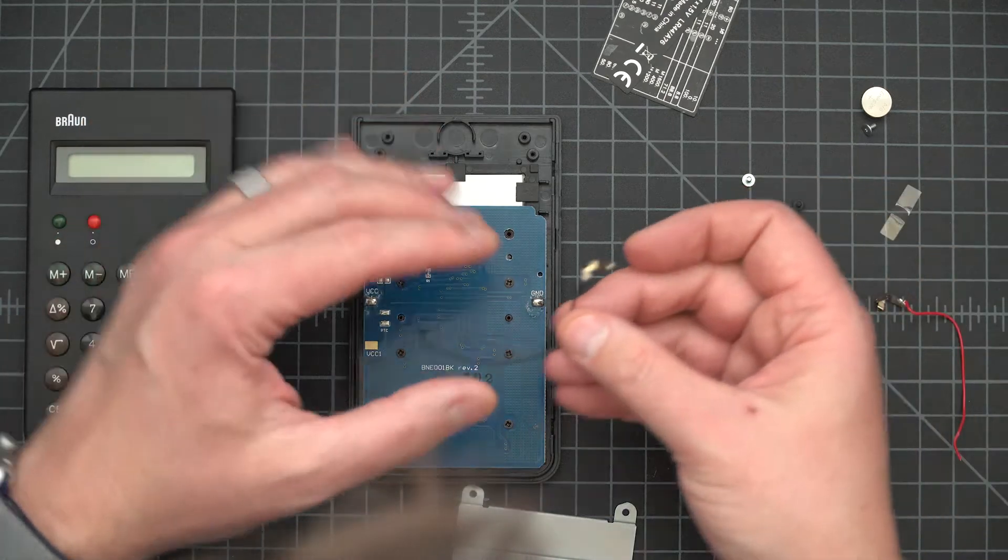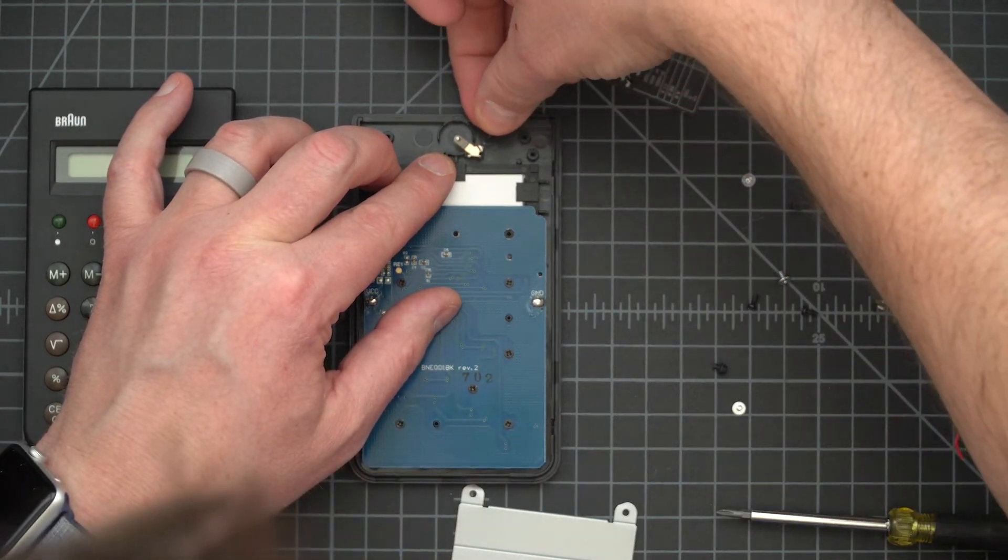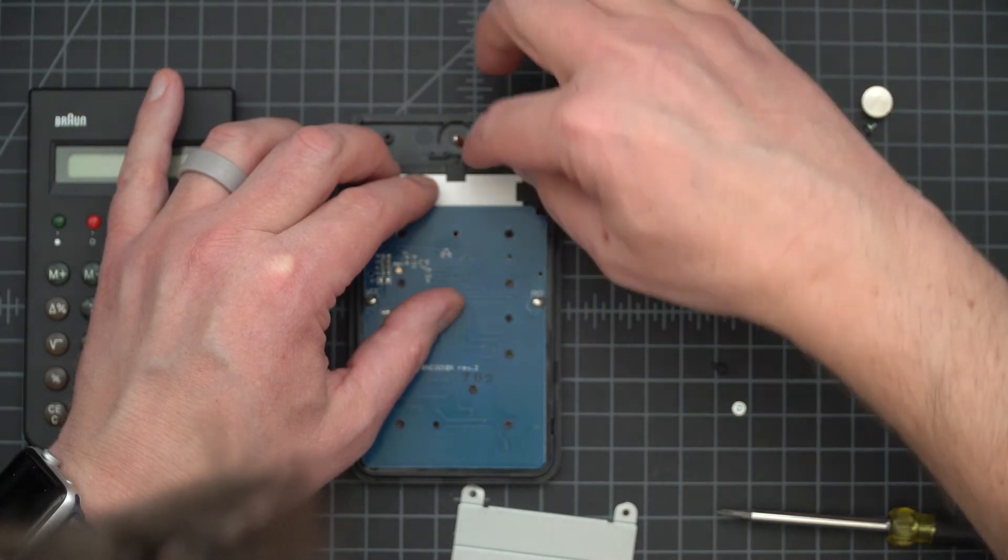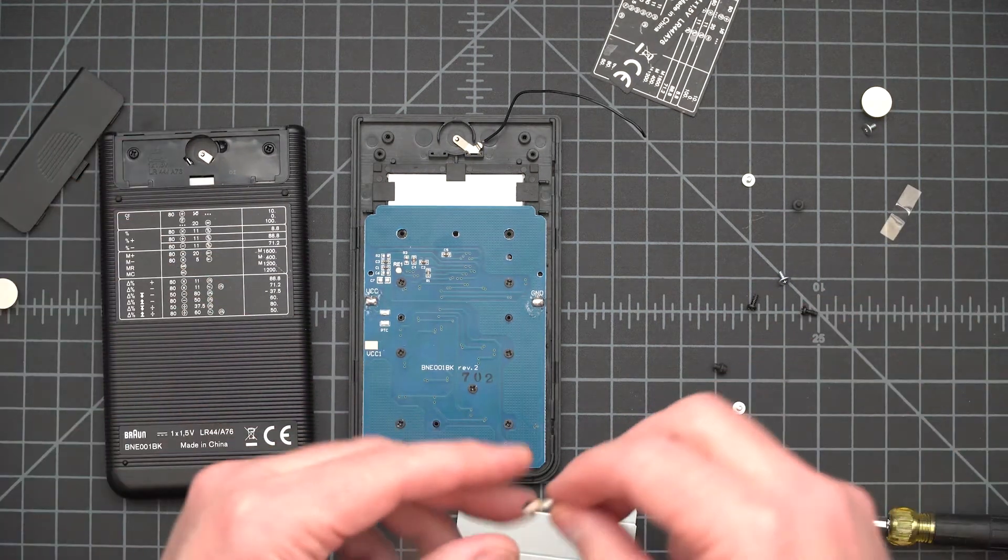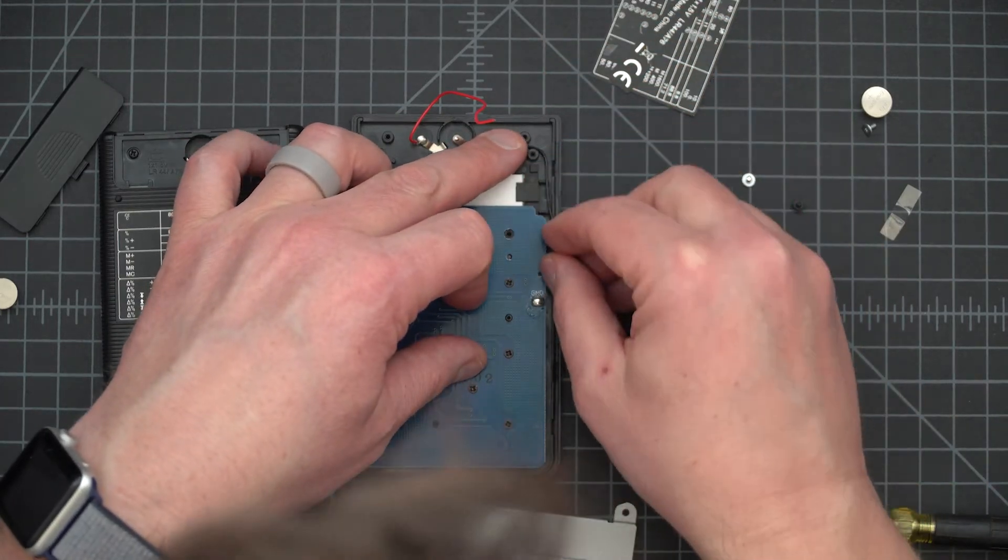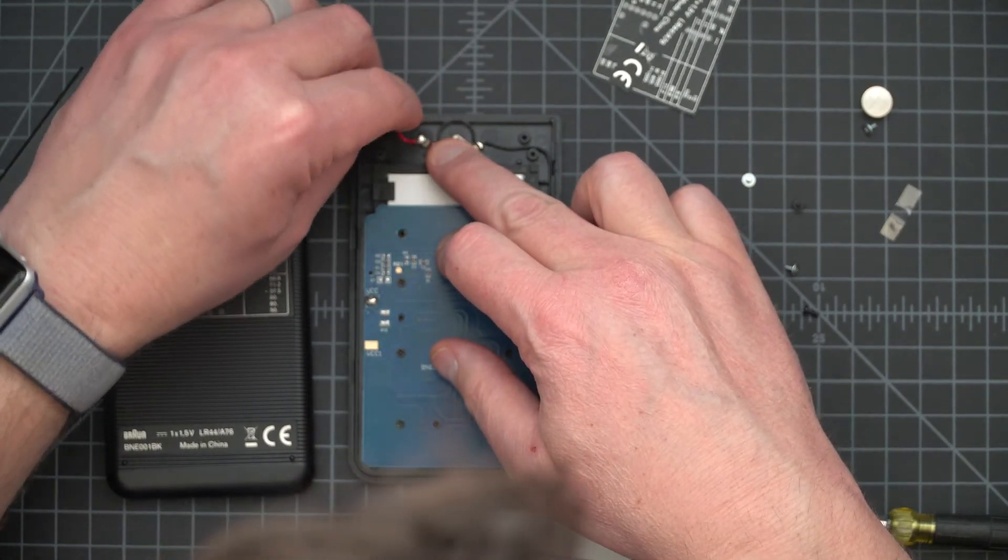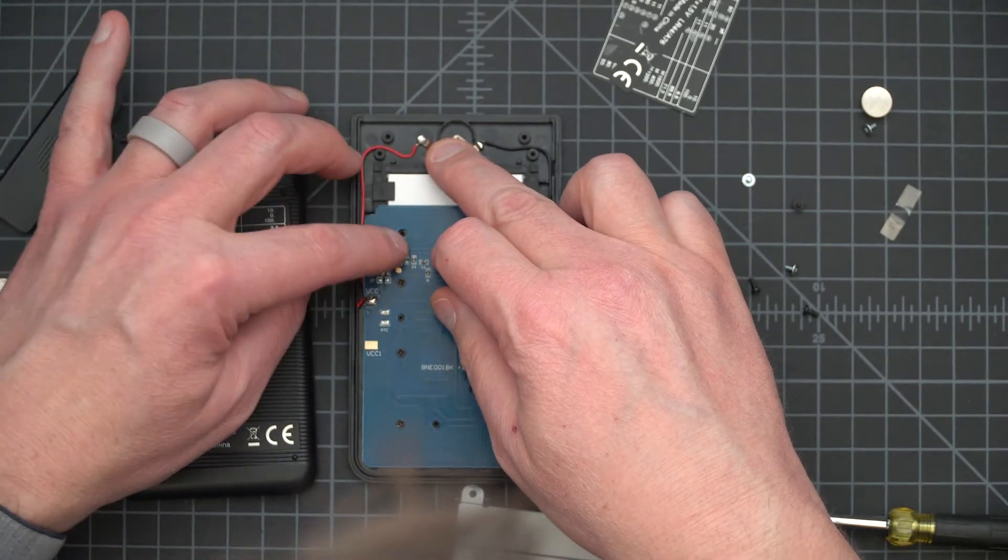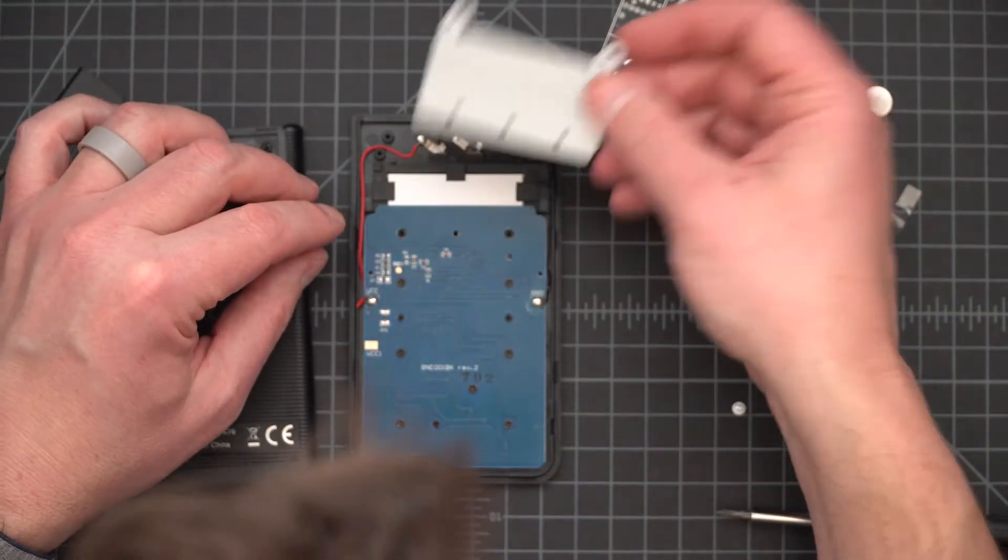What we need to do first though is we need to understand what's going on with these contacts. This contact goes in here like this. Let's actually make sure this is correct. Then this contact goes over here like this. Then we have these wires that get routed here somewhere to that solder joint. We have these wires, get routed over to this joint.